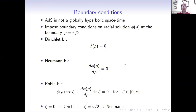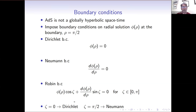As Anti-de Sitter space is not globally hyperbolic — even the covering space is not globally hyperbolic — we have to impose boundary conditions on the radial solution at the timelike boundary at rho equals pi over 2 in order to generate meaningful dynamics. The commonest boundary conditions studied are Dirichlet, where the value of the field vanishes at the boundary, and Neumann, where the derivative of the field vanishes. We can also look at Robin boundary conditions, which are a linear combination of Dirichlet and Neumann, parametrised by the Robin parameter zeta, which runs between zero and pi. For zeta equals zero we recover Dirichlet, and for zeta equals pi over 2 we recover Neumann.